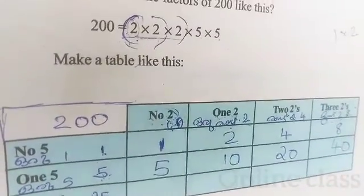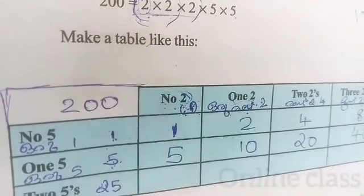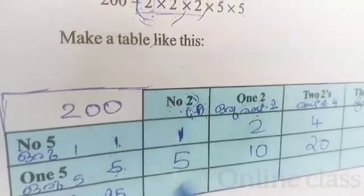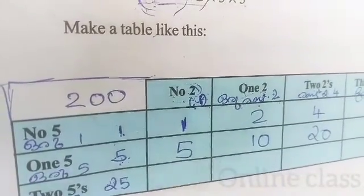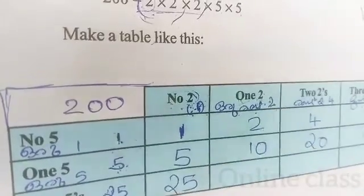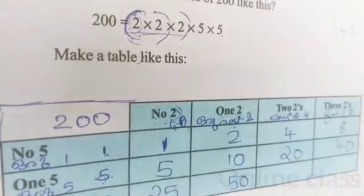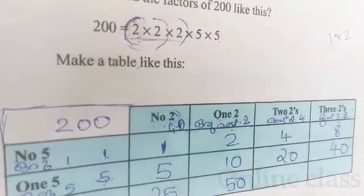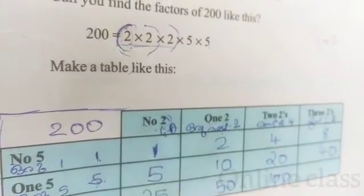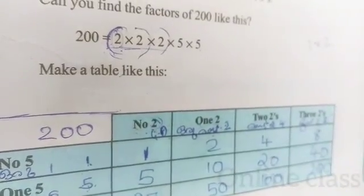This is 25. If we multiply this: 1 x 25 = 25. Then 2 x 25 = 50. 4 x 25 = 100. 2 x 200 — these are 3.